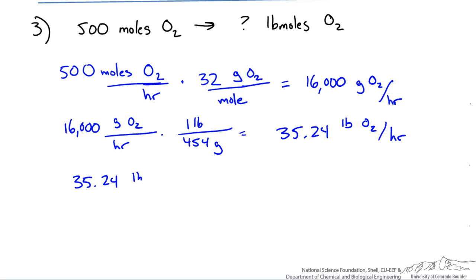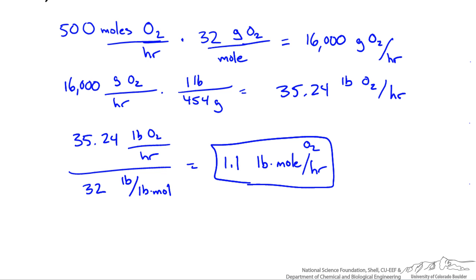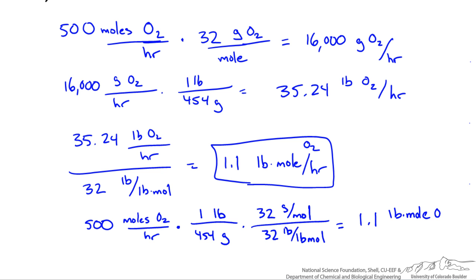Now we can then take 35.24 and divide it by our conversion factor, our molecular mass, 32 pounds per pound mole, and we should get 1.1 pound mole per hour. Now the shortcut way to do this is by seeing that we're using our conversion factor twice. So we could just jump those out of them and show that the conversion really is just pounds to grams. If we take 500 moles of oxygen per hour, multiply it by 1 pound over 454 grams, and then just to make sure the units look okay, you can see that we get the exact same thing. So to convert from moles to pound moles, we use our conversion of pounds to grams.